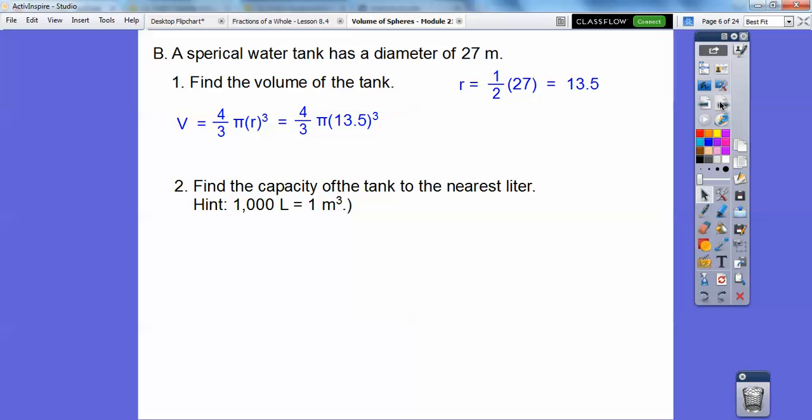Okay, so 4 thirds pi r cubed. So 13.5 cubed, and then 4 thirds. So 13.5 cubed is that number, 2,460.375, and then times 4 divided by 3, and then times pi. Anyways, and I get about 10,305.9947 meters cubed, okay?